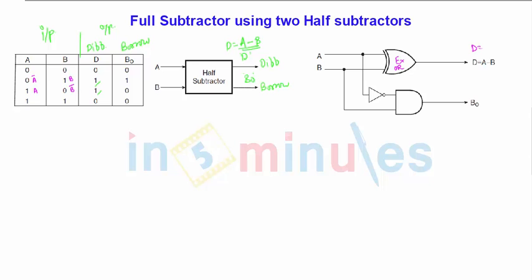So this is D = A - B. Logically it is A XOR with B, whereas BO is nothing but A̅ into B. Since B is present here for which A̅ into B only for one condition. So this is the half subtractor, the block diagram and this is the implementation for two inputs.